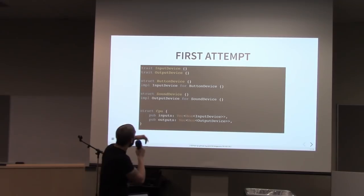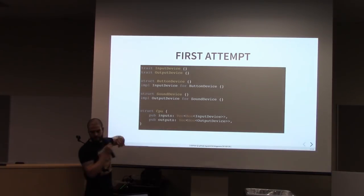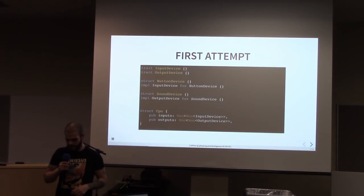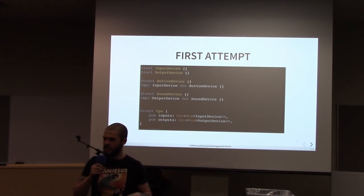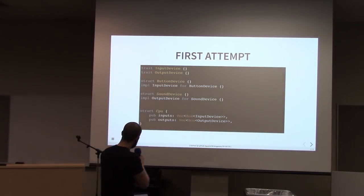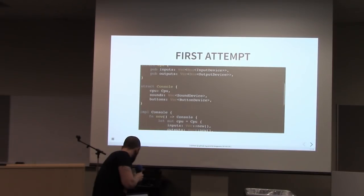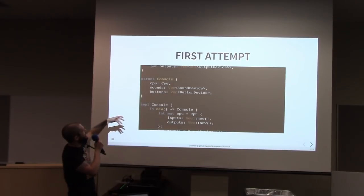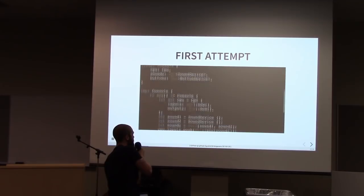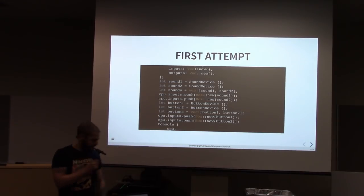My first attempt was something like this: I have two threads for input and output devices. One example of an input device would be a button — the console had six buttons in particular. Another example would be a sound device: the console had an external hardware device that connected to six different pins, and when you send an instruction to each pin, a different sound is reproduced. The CPU would have a list of input devices and output devices. The idea was that the sound devices and button devices are shared between the CPU object and the console object.